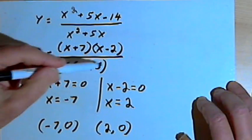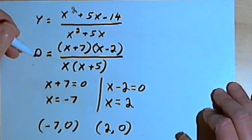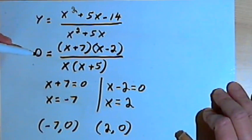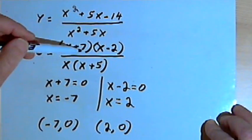To find the x-intercepts, set the rational expression, the right side of the equation, equal to 0, and really all you have to do is find out what would turn the numerator into 0.